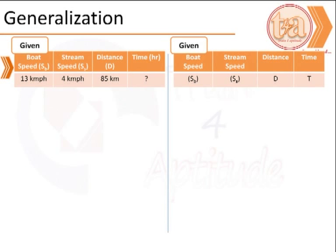We now try to generalize the problem. We could make a matrix of the information given and represent the speed of the boat by Sb, the speed of the stream by Ss, the distance one way by D, and the time taken to travel this distance as T.